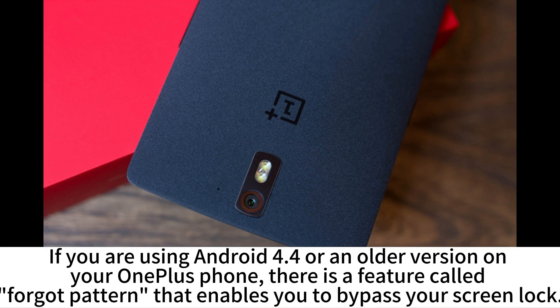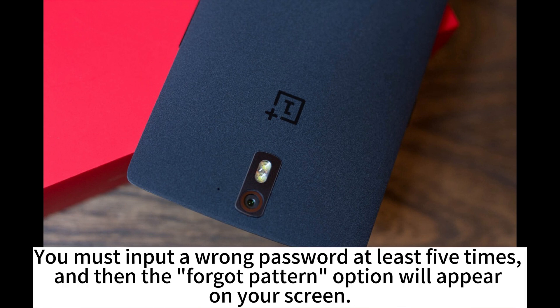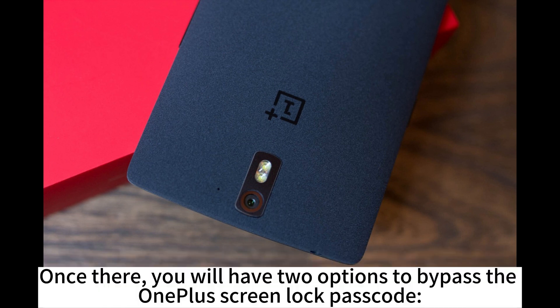If you are using Android 4.4 or an older version on your OnePlus phone, there is a feature called Forgot Pattern that enables you to bypass your screen lock. You must input a wrong password at least 5 times, and then the Forgot Pattern option will appear on your screen.